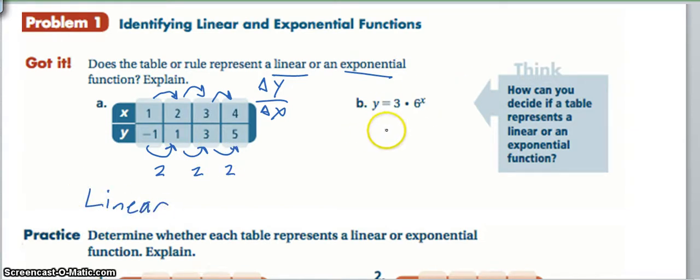Now, how exponentials are different is if I create an xy table here, and I actually like to create vertical xy tables. So let's say as x is 0, as x is 1, and as x is 2. Let's see if this is changing constantly, is the y changing constantly? If x was 0, 6 to the 0 is 1, so 3 times 1 is 3. Then 6 to the 1st, well that would be 6.